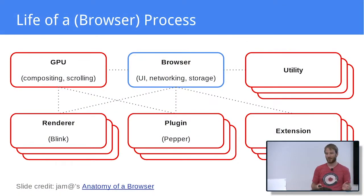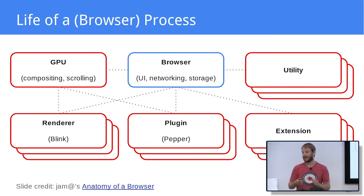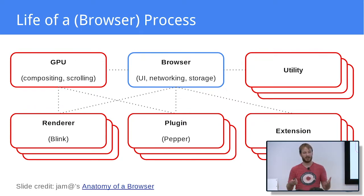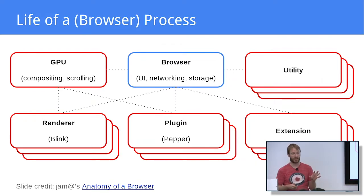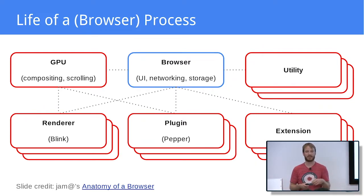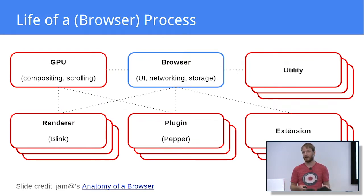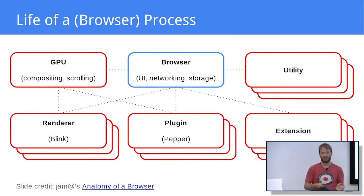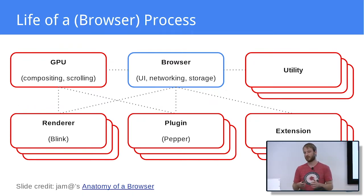As you have probably learned in the anatomy of a browser talk from Jam, Chrome is a multiprocess application. In this talk, we're going to focus on the browser process, which is the first one that gets created and also the one with the most privileges. That being said, a lot, but not everything that I'm going to explain today is also true for child processes.